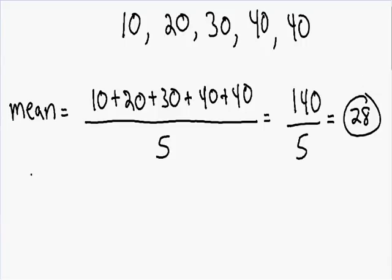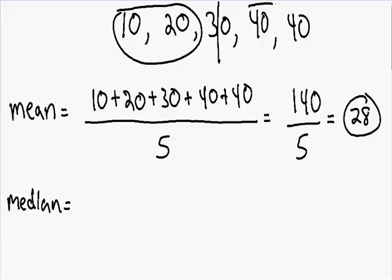Now let's find our median. To find the median, first you need to order the numbers from smallest to largest. We already have 10, 20, 30, 40, and 40 in order. The median is always the number that's right in the middle. Notice how 30 has two numbers to the left and two numbers to the right, so 30 is exactly in the middle. Our median is equal to 30.